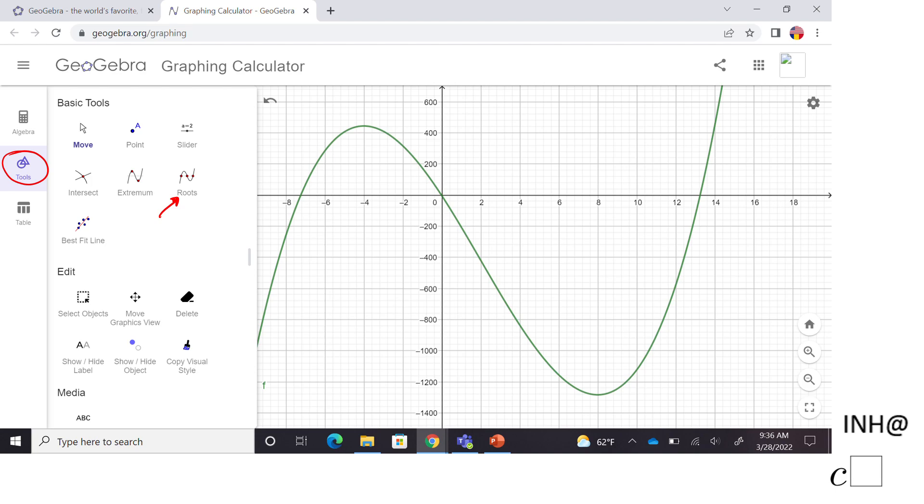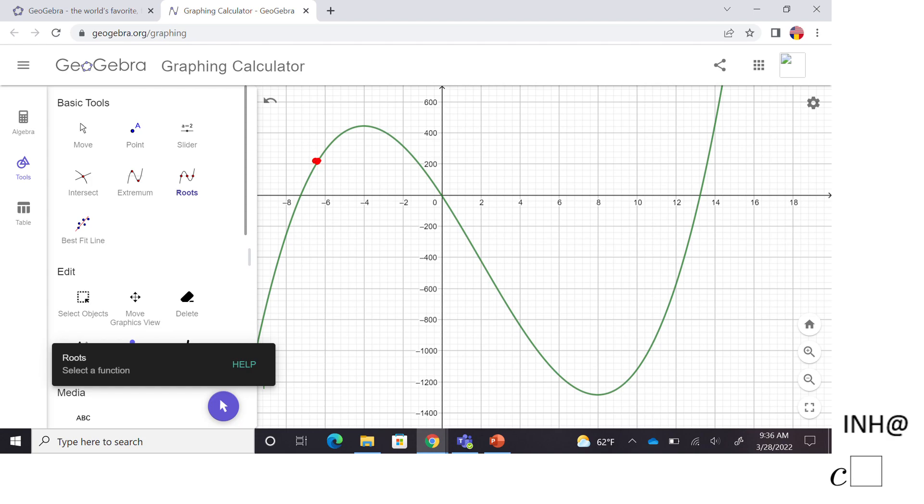Then you can click on this basic tool which says Roots. You're going to click on it, you get this message 'select a function,' so you're going to select your function. You can click anywhere on this function and then GeoGebra is going to show you these three points A, B, and C which are the intercepts, the roots or the zeros of the function.